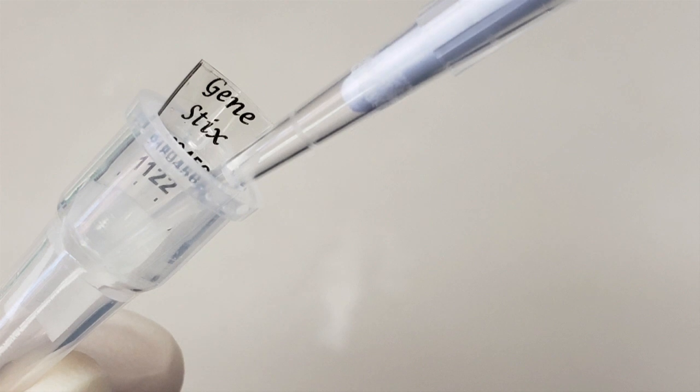Pipette 50 microliters of elution buffer onto the membrane of the GeneStix. Make sure to wet the entire membrane with elution buffer.